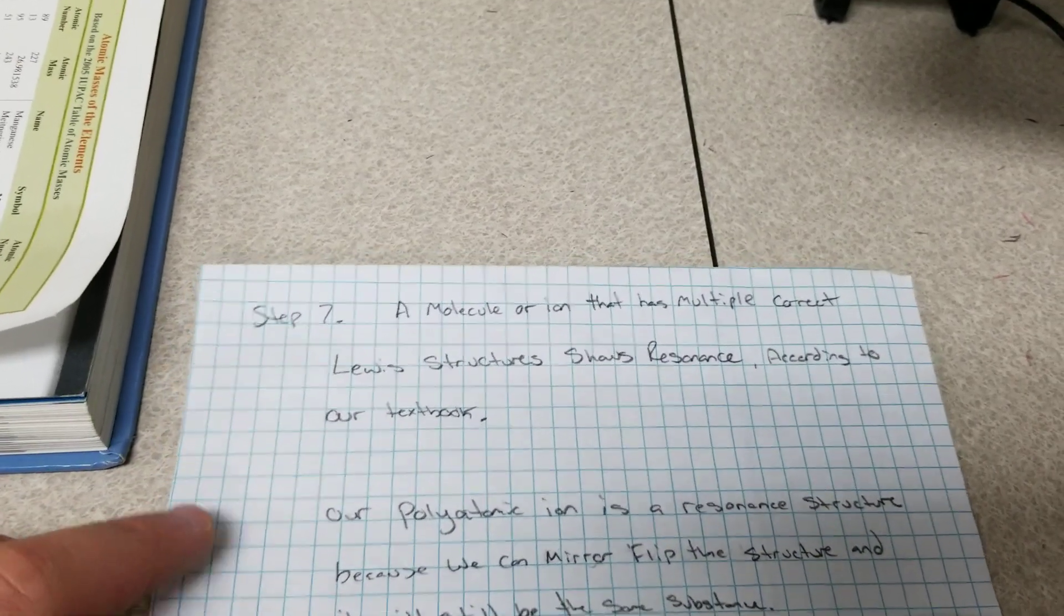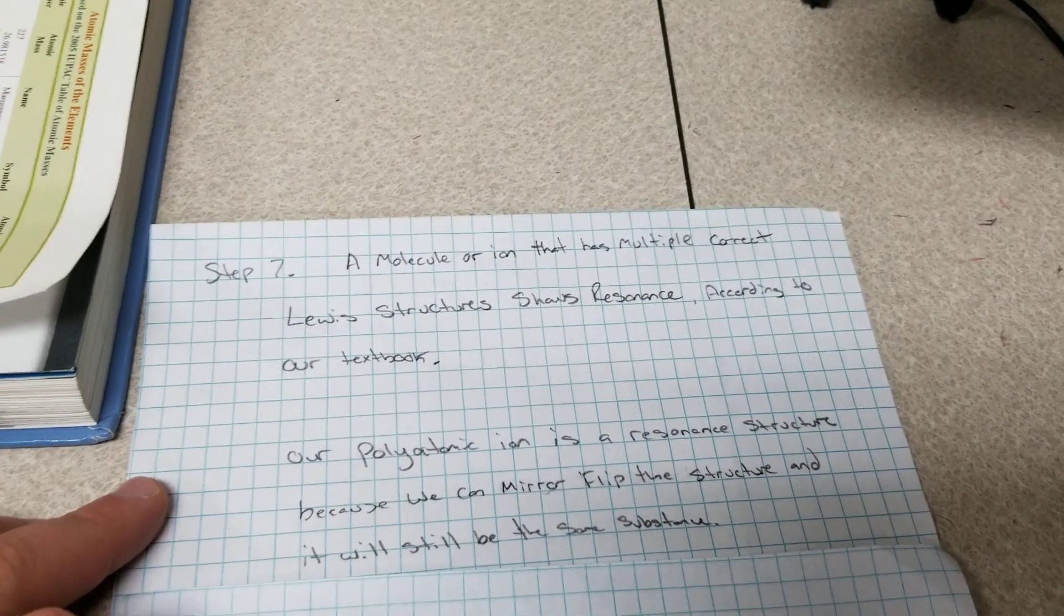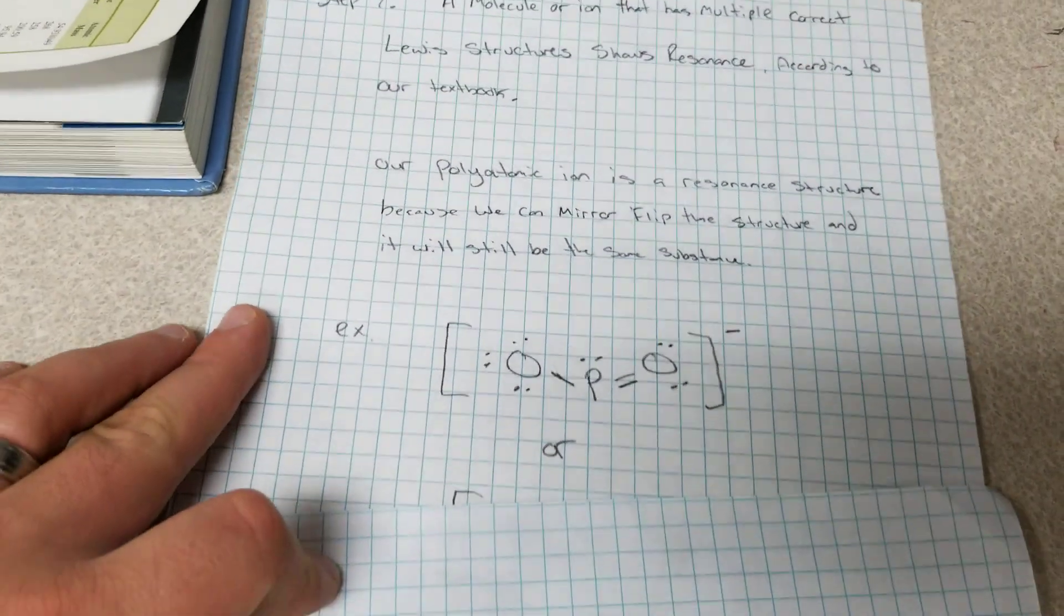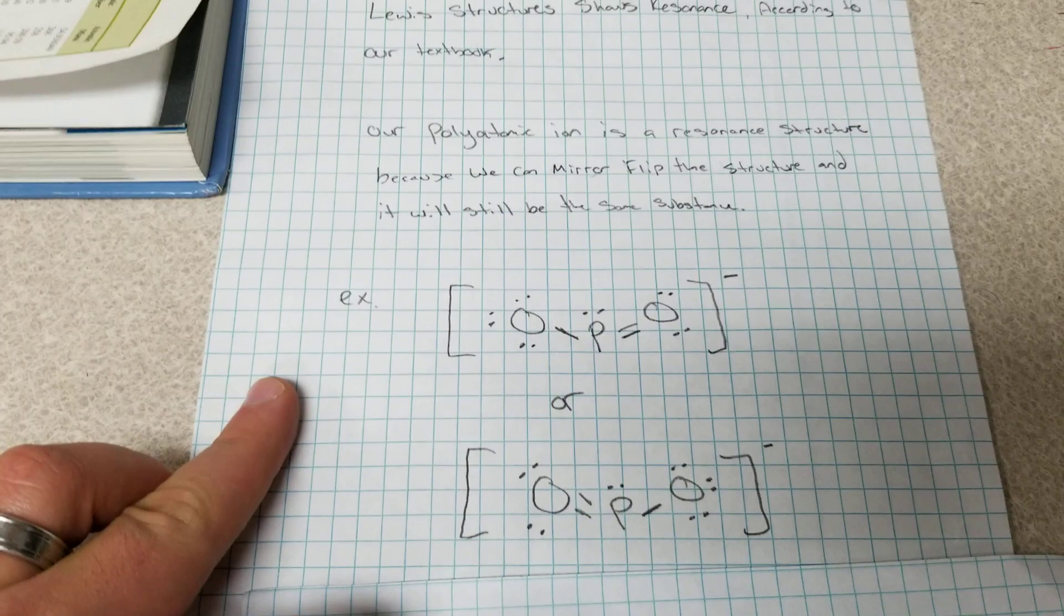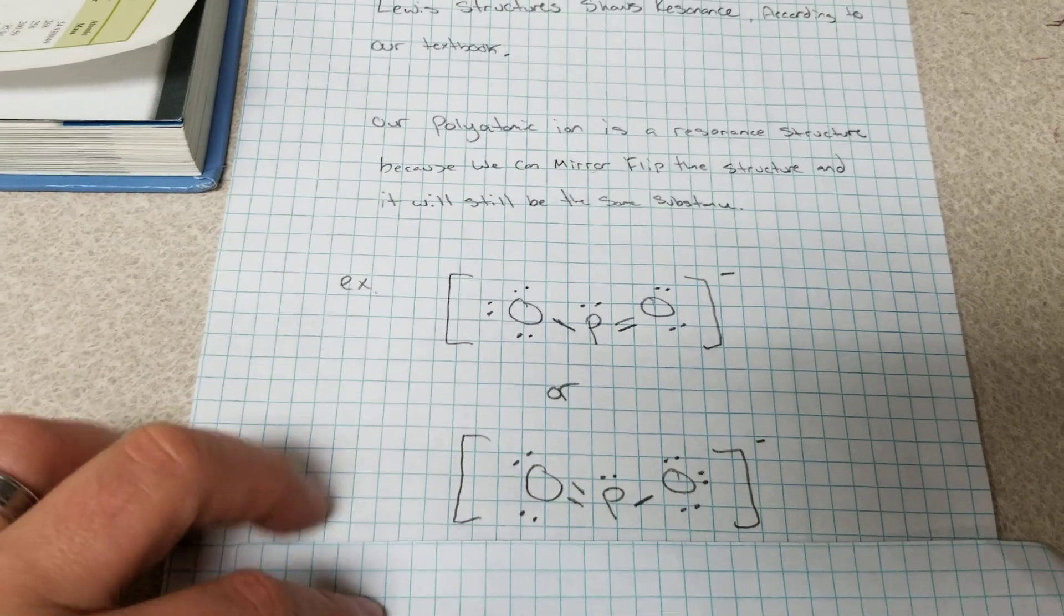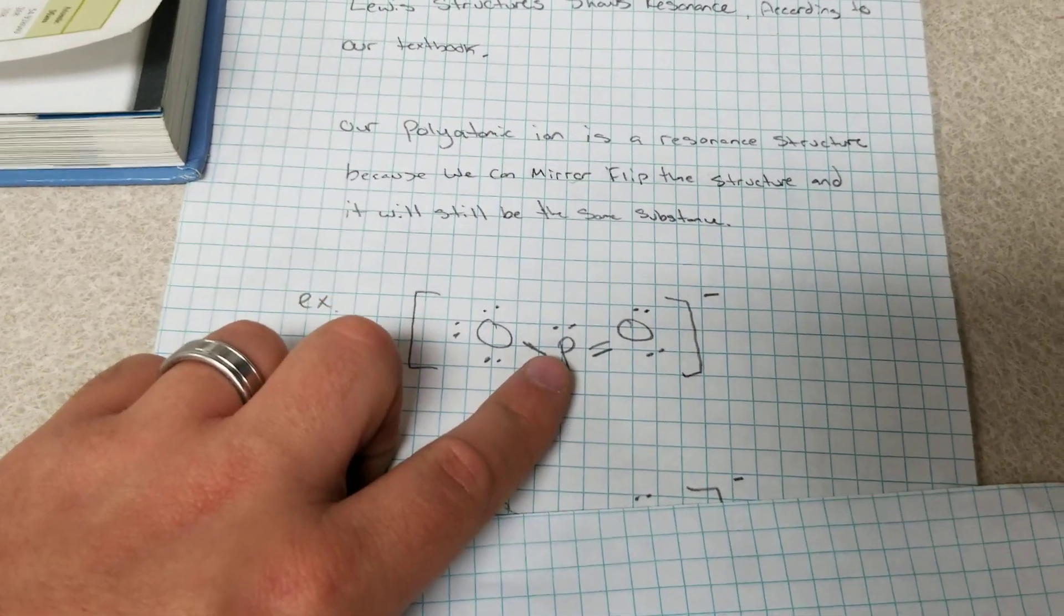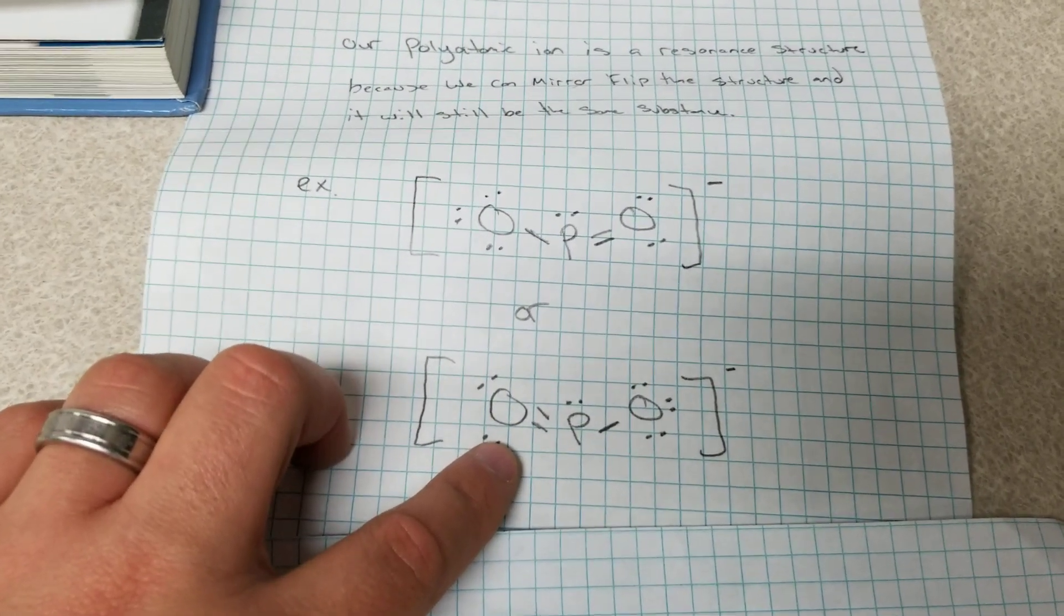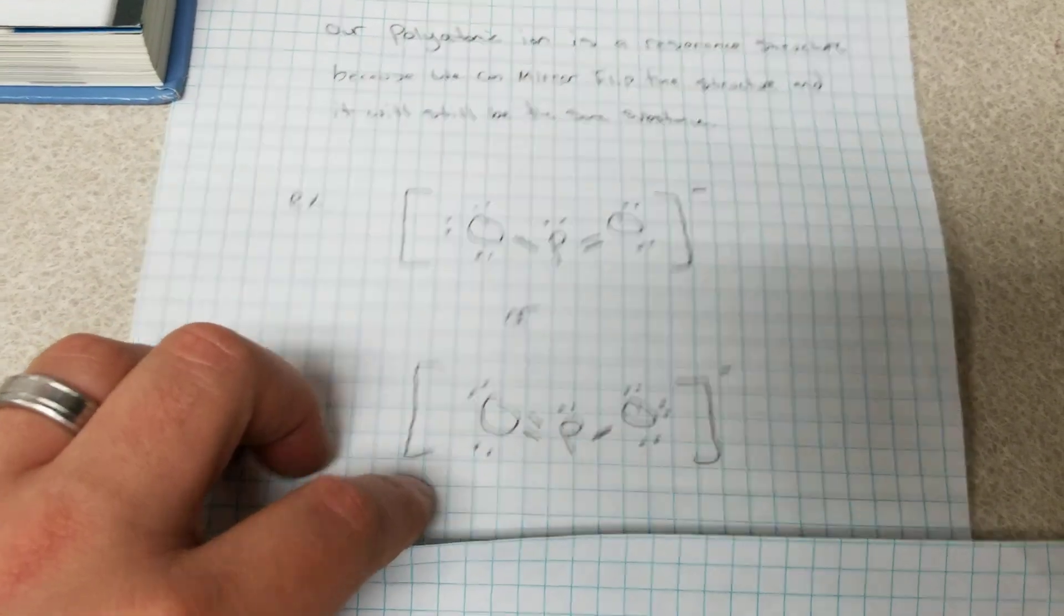So that means that our polyatomic ion is a resonance structure because we can mirror flip the structure and it will still be the same substance. So you can see right here our polyatomic ion can be drawn in two ways and still be correct and I have the example here. You see the single bonds and double bond right there and you see the double bond on the other side right here. They were mirror flipped and they have two different structures but they're still the same substance.